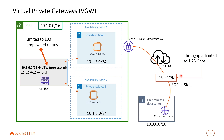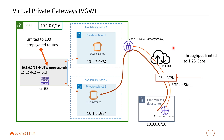VPN connection throughput is limited to 1.25 Gbps, which is about as fast as IPsec can go on x86 machines in the cloud. To exceed this, you can create multiple VPN tunnels and enable equal-cost multipath (ECMP) load balancing across them, though this adds architectural complexity. With route propagation enabled, EC2 instances in private subnets can access the on-premises data center through the IPsec VPN connection via the VGW.